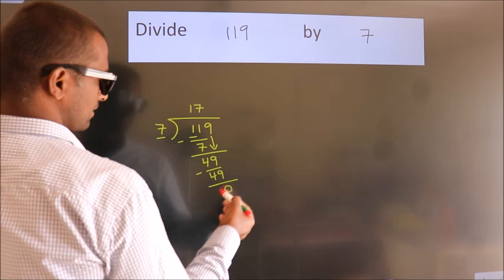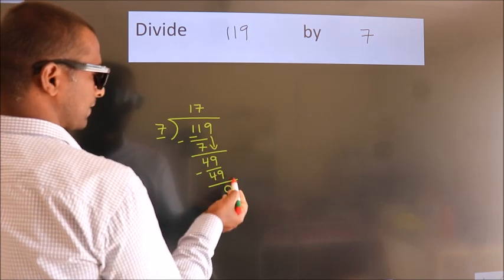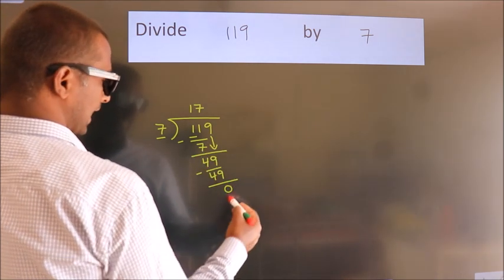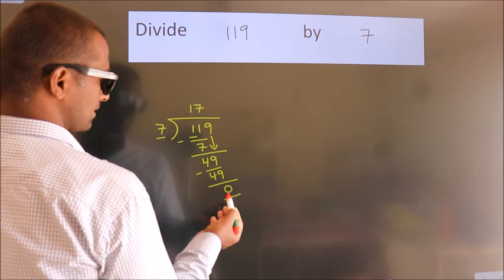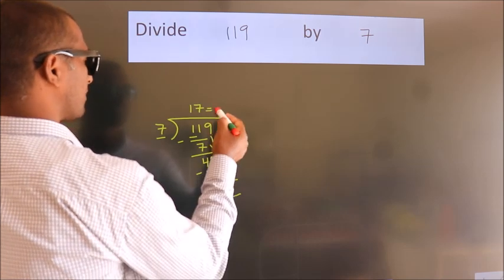After this, no more numbers to bring it down and we got remainder 0. So this is our quotient.